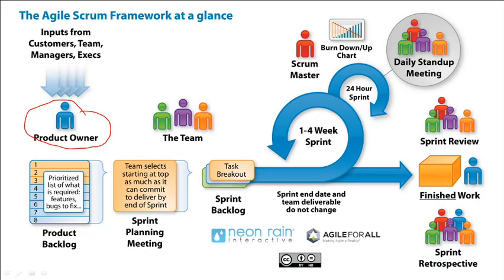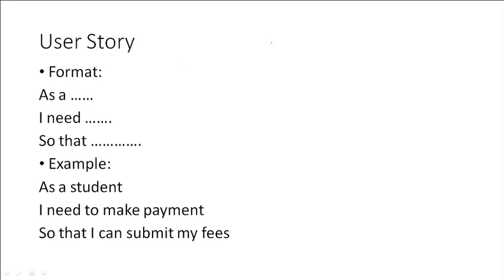For example, suppose GLA University assigned a particular person as product owner. That person is responsible for collecting information from all stakeholders of GLA University — faculty members, students, their parents, and management. After collecting requirements, this is the responsibility of the product owner. The requirements will be arranged in a backlog known as the product backlog. In the product backlog, requirements are arranged in the form of user stories. In traditional models, requirements came in the form of SRS, which are very large, descriptive, and complex to modify.